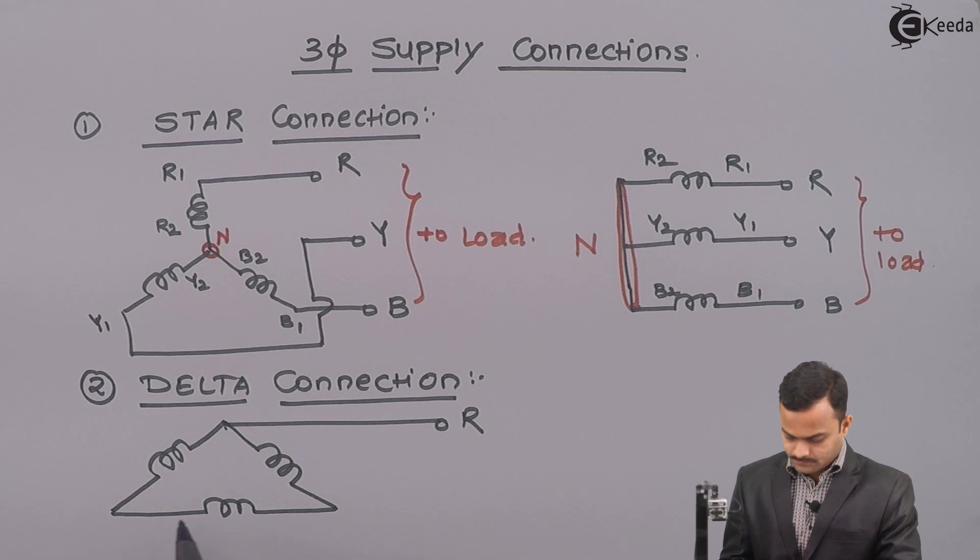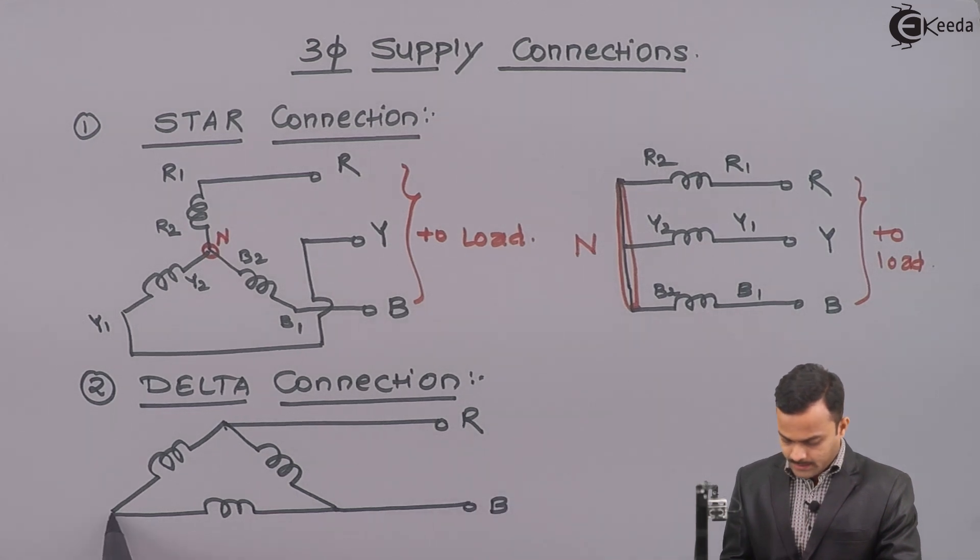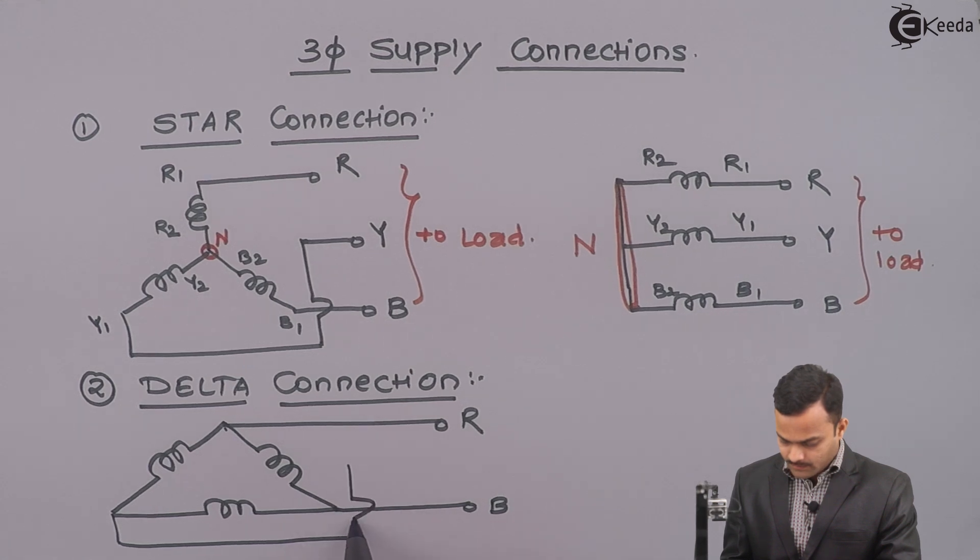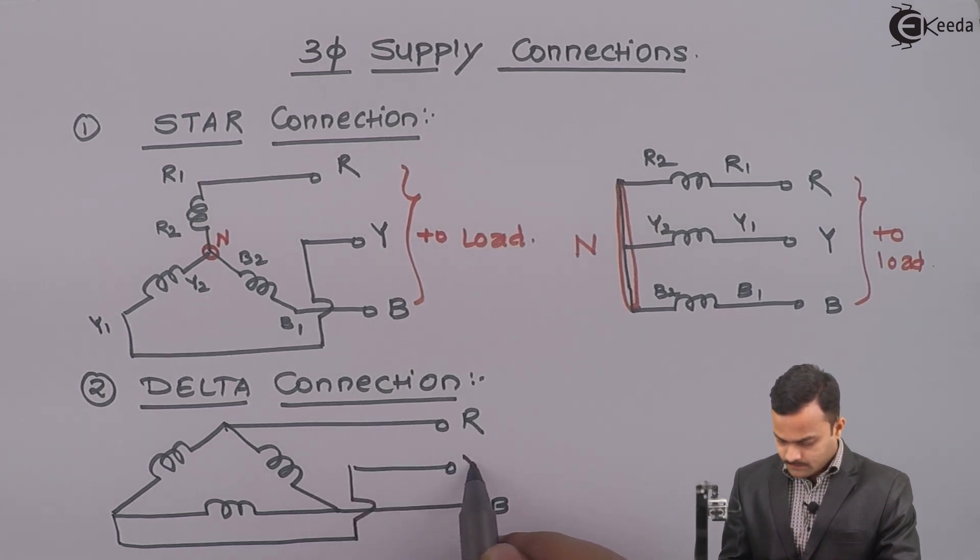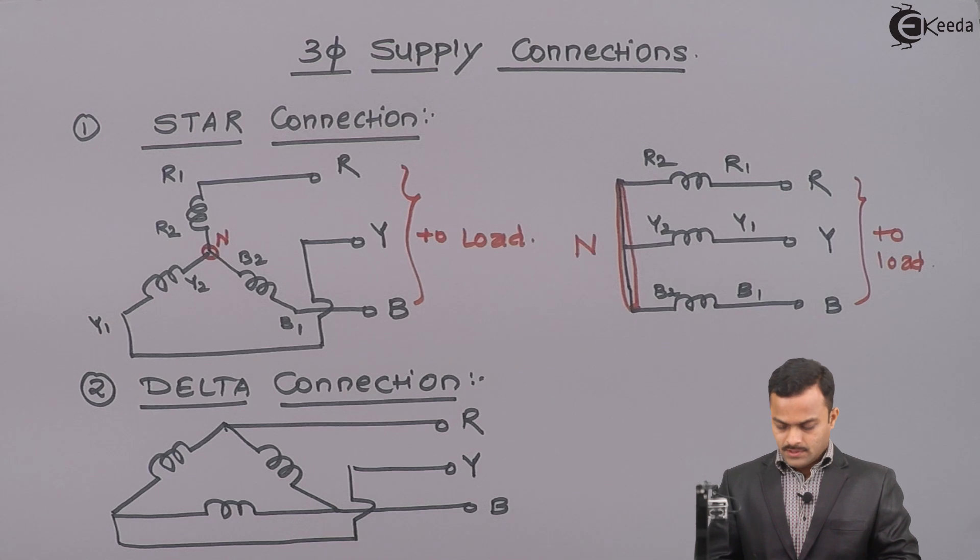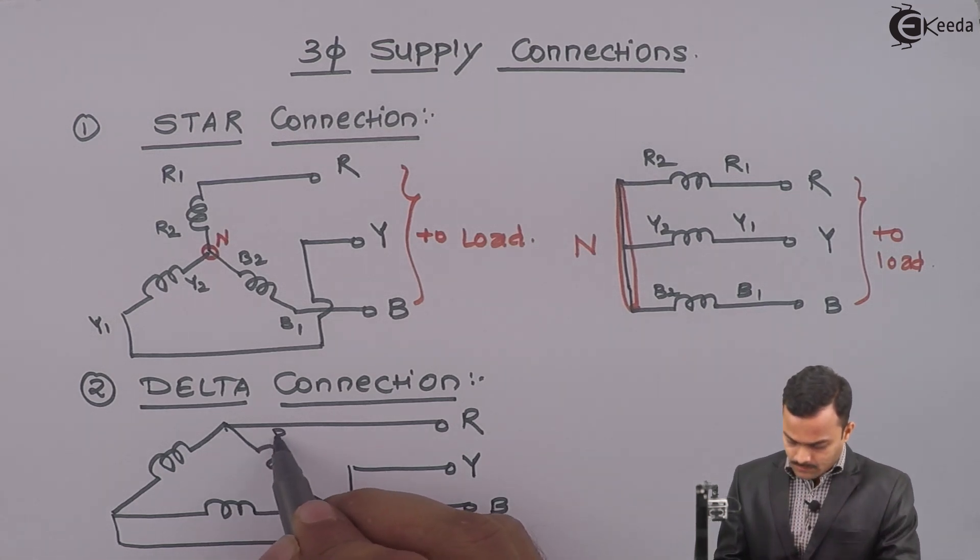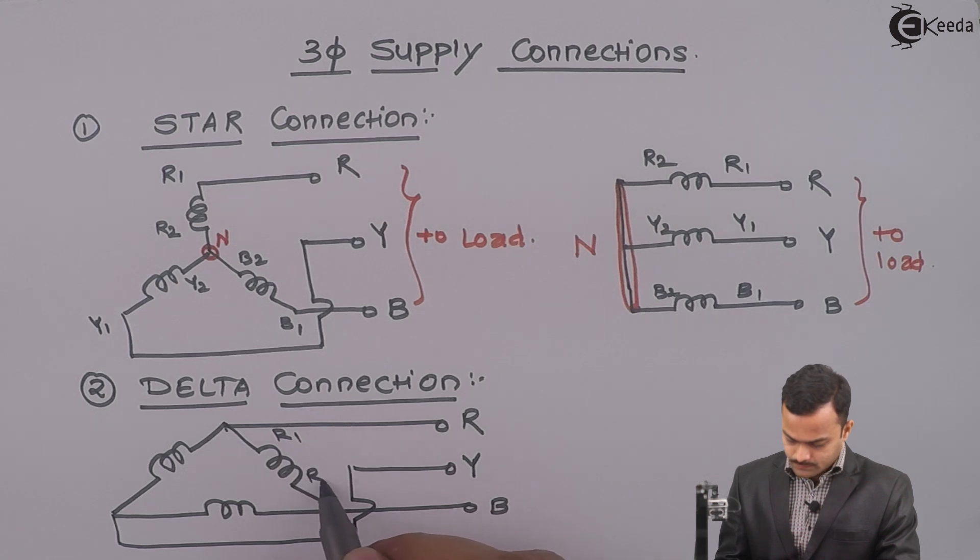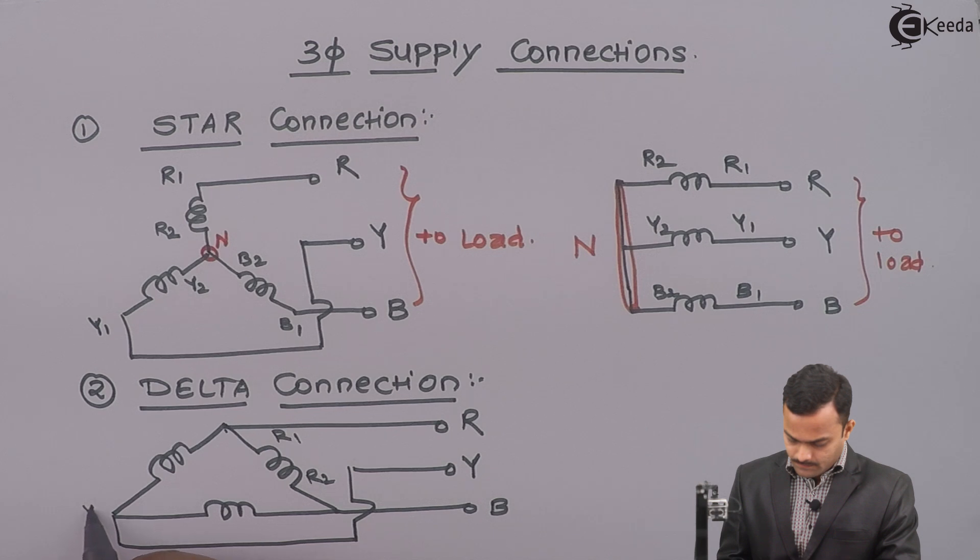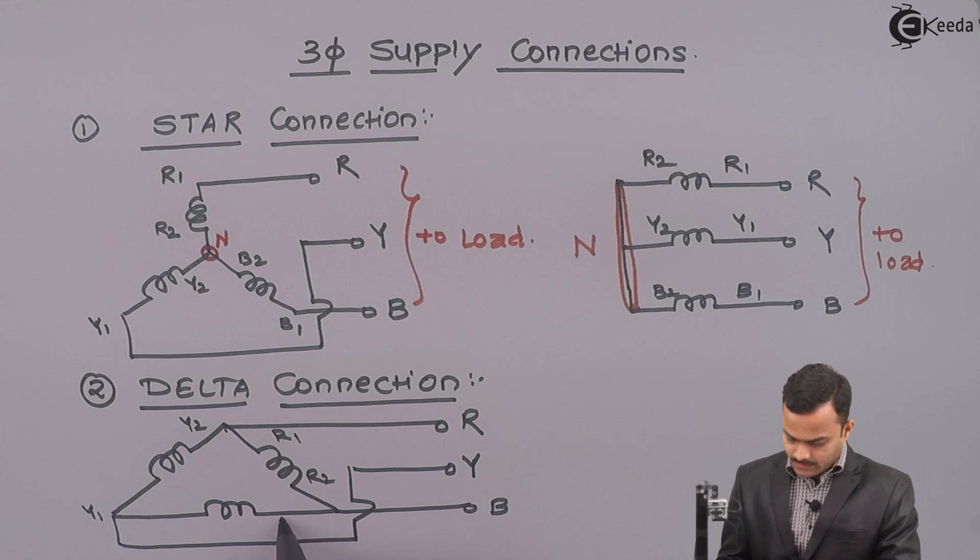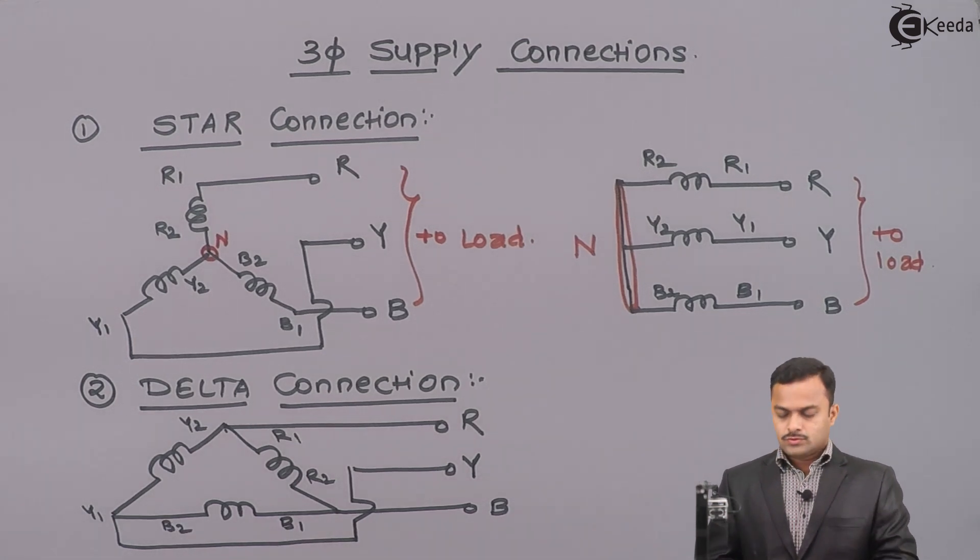This is R line, B and this is Y. Here, it will be R1, R2. This will be Y1, Y2. And this will be B1, B2.